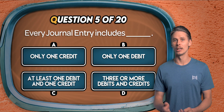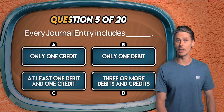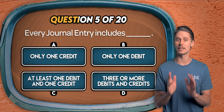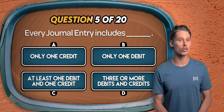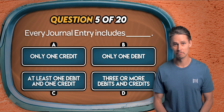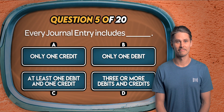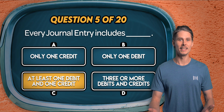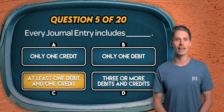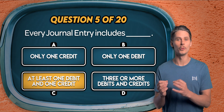Question 5. Every journal entry includes only one credit, only one debit, at least one debit and one credit, or three or more debits and credits? It's C. In double-entry accounting, every journal entry affects at least two accounts.